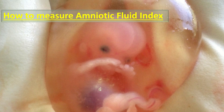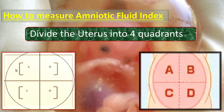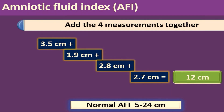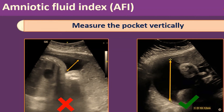To measure the amniotic fluid index: step one, divide the uterus into four quadrants A, B, C, and D, as shown in the pictures. Step two, measure the deepest vertical pocket of fluid in each quadrant. Step three, add the four measurements together. The normal AFI is 5 to 24 cm. One important point is that the pocket should be free of cord and fetal parts — the left picture shows the wrong method, and the right side shows the correct method. A second important point is to measure the pocket vertically; an oblique measurement, as shown on the left, is incorrect, while the vertical measurement on the right is the correct way.